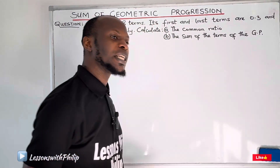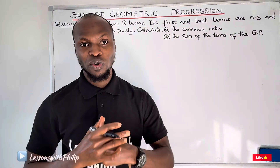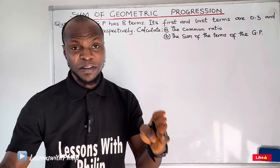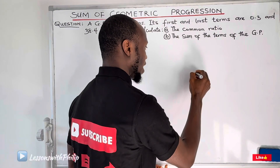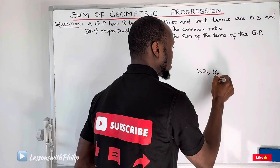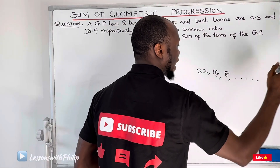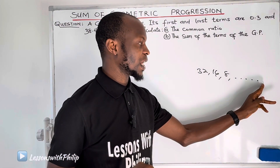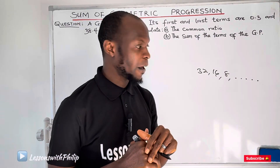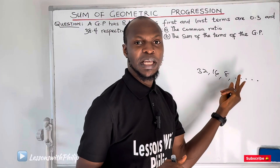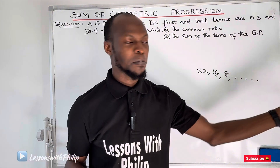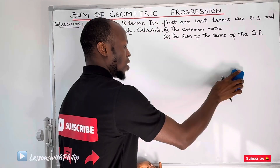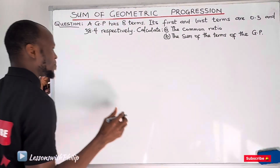In our previous classes, I mentioned that some sequences have a terminal term, while some sequences go to infinity. That shows that a sequence like 32, 16, 8 can keep going till infinity, except something stops it. If a sequence keeps continuing like that, it has a particular formula to use to find those sums. If you have a terminal sequence, there's a formula to add all the terms in the GP.